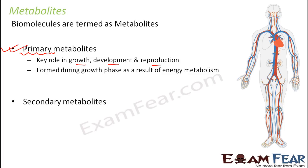This is a two-way relationship: the living organism produces biomolecules, and biomolecules in turn help the living organism in its survival — a give-and-take process. Since primary metabolites are helpful in growth and development, they are formed early during the growth phase as a result of chemical reactions.